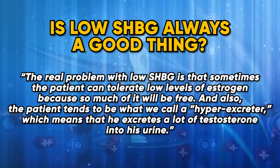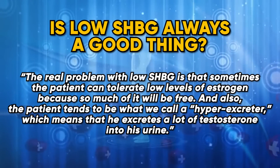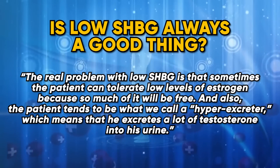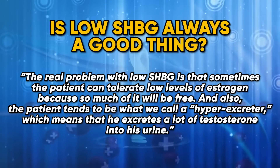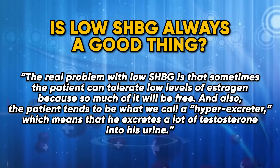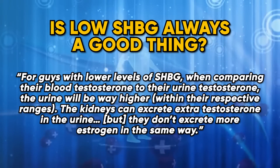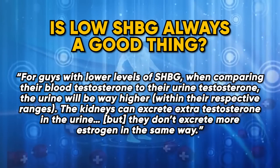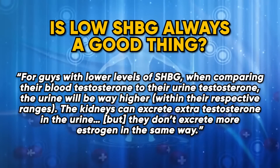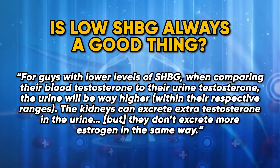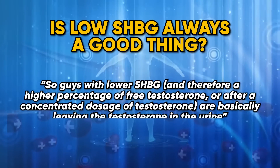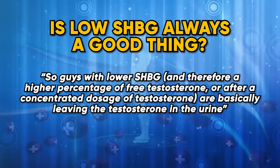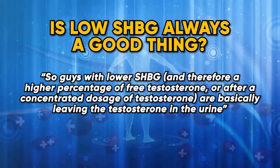Dr. Crisler explains that the real problem with low SHBG is that sometimes the patient can tolerate low levels of estrogen because so much of it will be free. Also, the patient tends to be what we call a hyper-excreter, meaning he excretes a lot of testosterone in his urine. For guys with lower SHBG, when comparing blood testosterone to urine testosterone, the urine will be way higher. The kidneys can excrete extra testosterone in the urine but don't excrete more estrogen in the same way — so guys with lower SHBG and a high percentage of free testosterone are basically leaving testosterone in the urine.